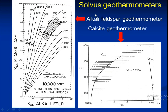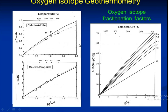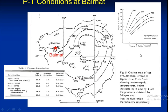This is the solvus geothermobarometer, including the alkali feldspar geothermobarometer and the calcite geothermobarometer. The oxygen isotope geothermobarometer uses oxygen isotope fractionation factors — calcite-albite and calcite-diopside — at pressure-temperature condition as bar 1. This is the outline map of a Pre-Cambrian terrain showing metamorphic temperatures indicated by open circles and dots, representing temperatures obtained by phase equilibria and iron-titanium oxide thermometry respectively.